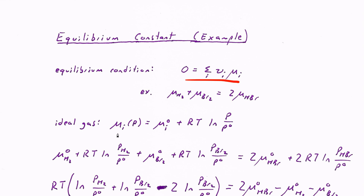The chemical potential of an ideal gas at some particular pressure is equal to the standard chemical potential — the chemical potential under standard pressure — plus RT times the log of the ratio of whatever the pressure is to the standard pressure. So as the pressure changes, the chemical potential changes as well.